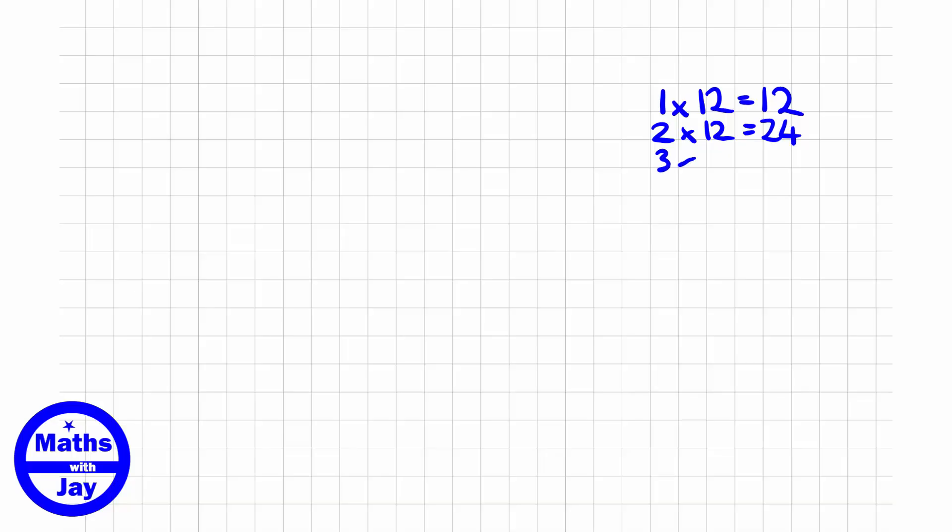One way of thinking about this is simply to just add on 12 to the previous number. So we've got 12, 24, 36, and then 4 times 12 we could either double 24 or just add 12 onto 36, so we've got 48. 12 times 5, or 5 times 12, that's going to be 48 plus 12.